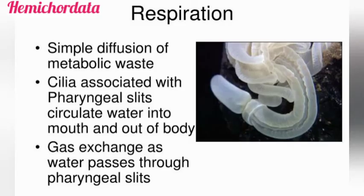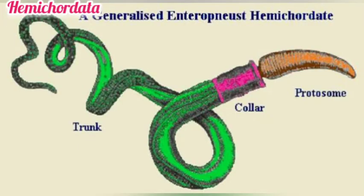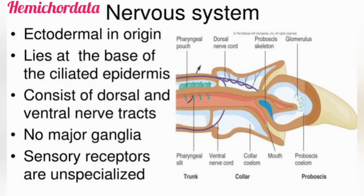Respiration occurs through paired gill slits that open into the pharyngeal region. Excretion occurs by a single proboscis gland, also called the glomerulus gland, located in the proboscis region. The nervous system is primitive in nature.